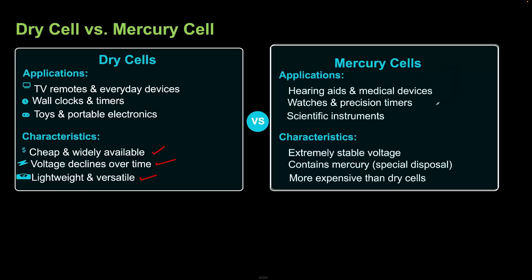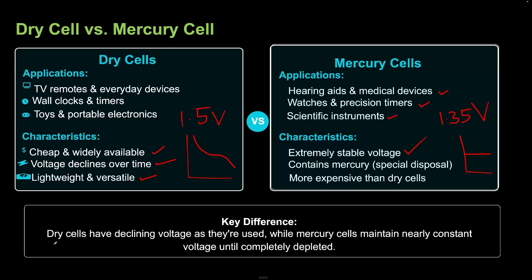Mercury cells are used in smaller devices like hearing aids and medical devices, watches and precision timers, and scientific instruments. The mercury cell has very stable voltage. Dry cells have about 1.5 volts, mercury cells about 1.35 volts. The key difference is dry cells have declining voltage as they're used, while mercury cells maintain nearly constant voltage until completely depleted.